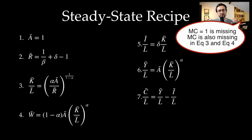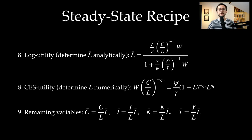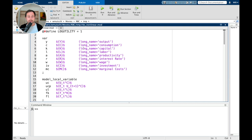Here is a summary of the steady state recipe, which we can then provide to Dynare. We express everything in relation to steady state labor, then compute steady state labor itself. For log utility, we have a closed-form expression. For CES utility, we need a numerical optimization technique to find L-bar. Once we have steady state labor, we can simply compute all variables by multiplying the ratios by this value. Now let's look at how to compute the steady state in a mod file in Dynare.